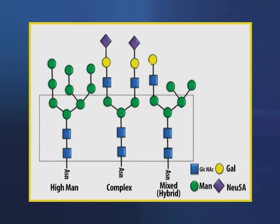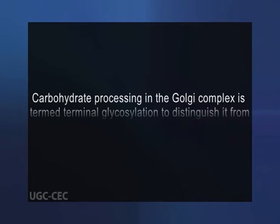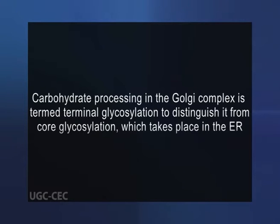Note that N-glycosylated proteins have in common a pentasaccharide core. Carbohydrate processing in the Golgi complex is termed terminal glycosylation to distinguish it from core glycosylation, which takes place in the endoplasmic reticulum. Tremendous structural diversification can occur as a result of the terminal glycosylation process.